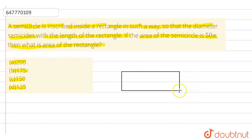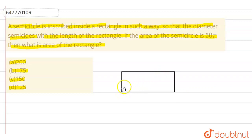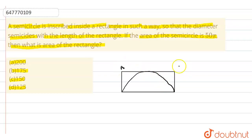हमारा rectangle इस तरह है, और इसके अंदर हमने एक semicircle बनाया है — यहाँ से यहाँ तक — वो इसके length पर semicircle करता है. So, यह है A, यह है B, और यह है C, और यह है D. So, अगर हम ध्यान से देखें, जो हमारे semicircle की diameter है, वो ही हमारे rectangle की length भी है.